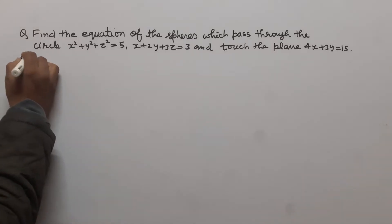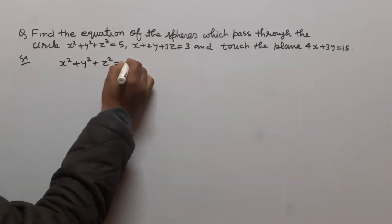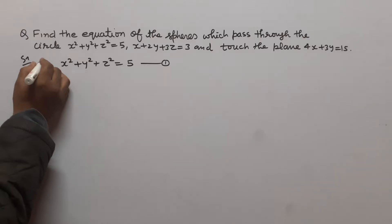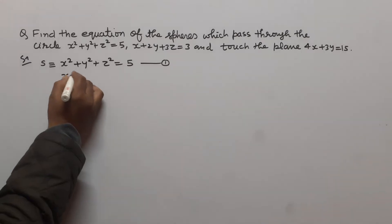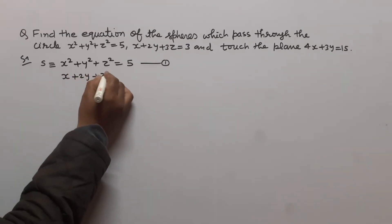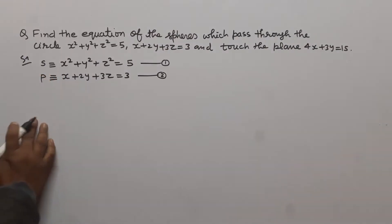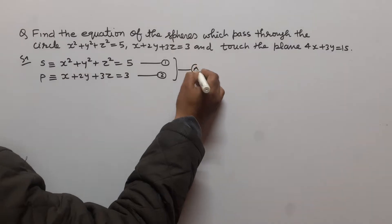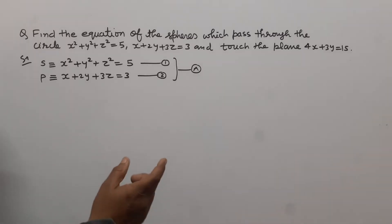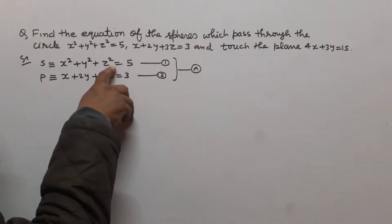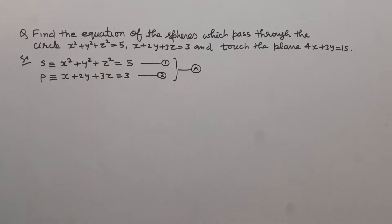Here, x² + y² + z² = 5 is the equation of the sphere — suppose this is denoted by capital S — and x + 2y + 3z = 3 is the equation of the plane, denoted by P. We know that when we take the equation of the sphere together with the equation of the plane, this represents the equation of the circle.